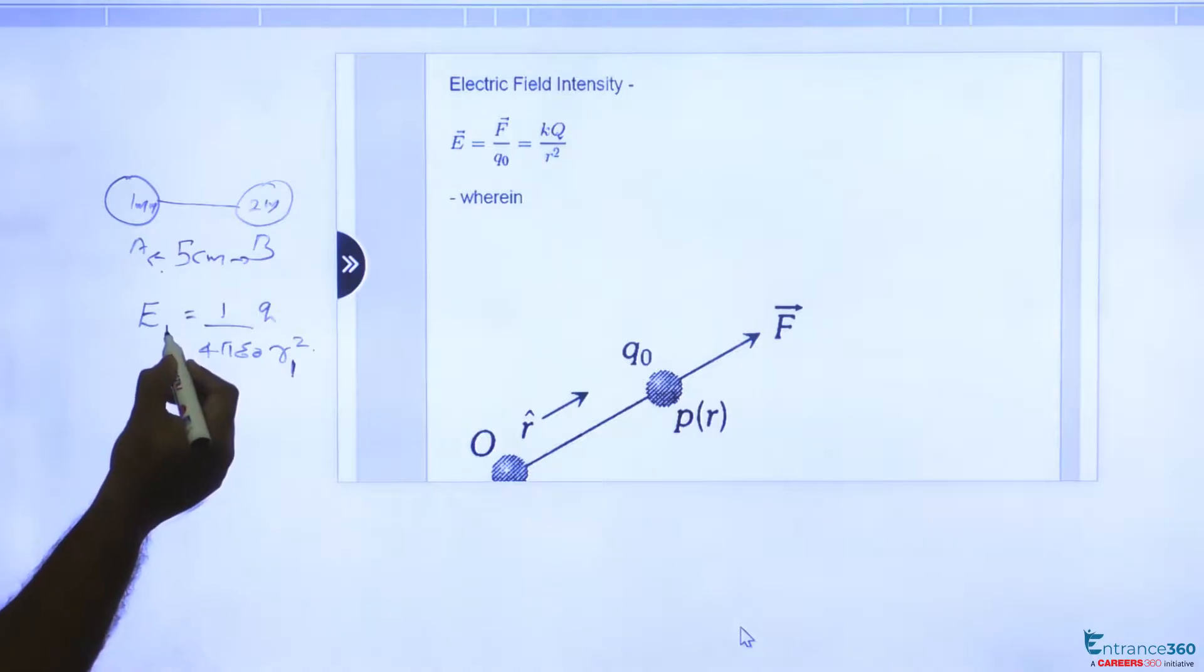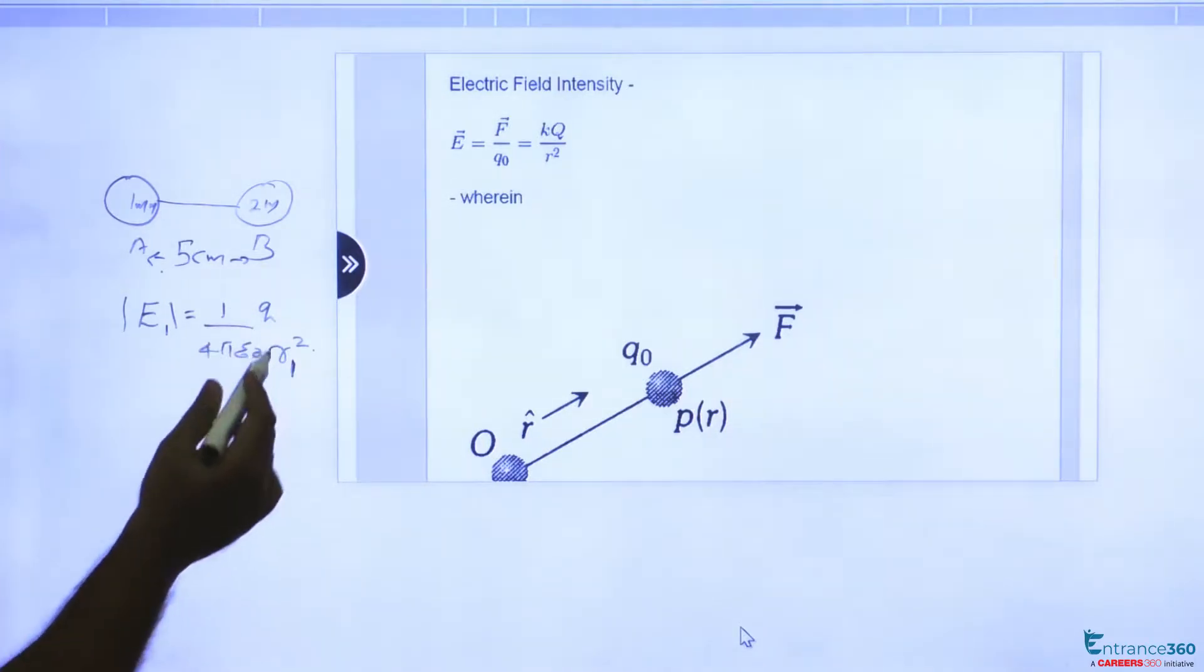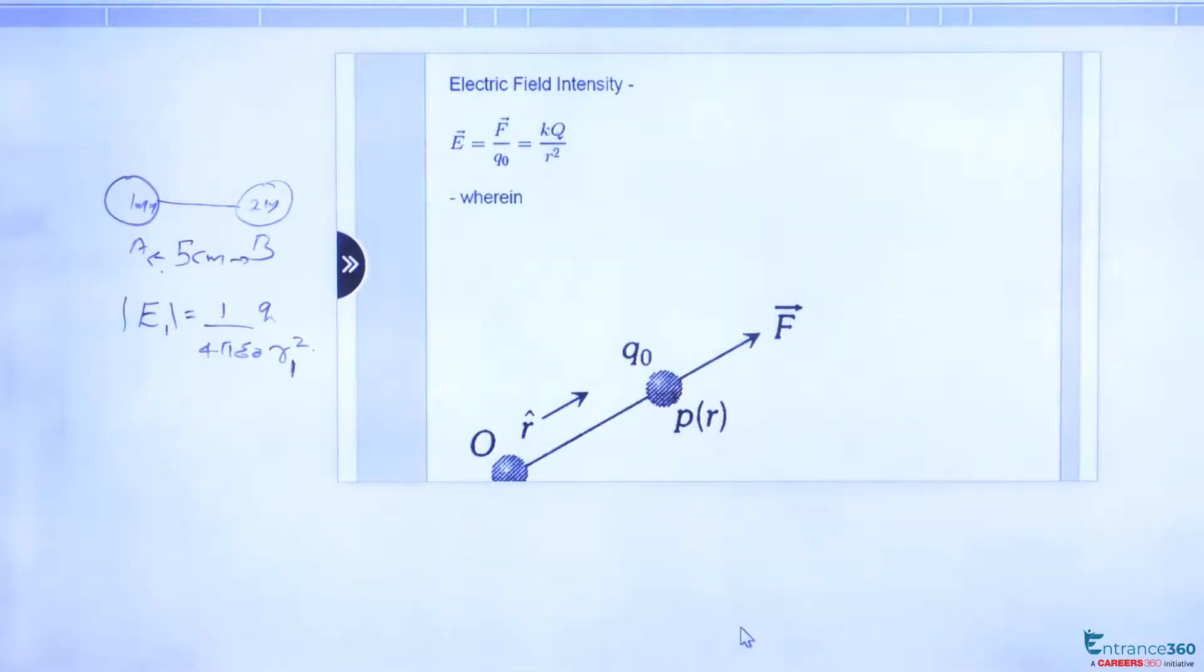We can write, we are just taking the magnitude now, E1 equal to q by 4 pi epsilon 0 r1 square.